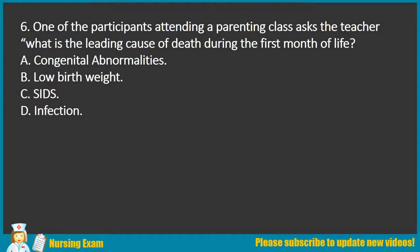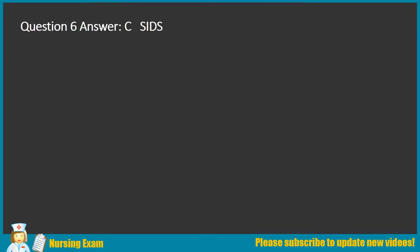Question 6. One of the participants attending a parenting class asks the teacher: what is the leading cause of death during the first month of life? A. Congenital abnormalities. B. Low birth weight. C. SIDS. D. Infection. Answer: C. SIDS.